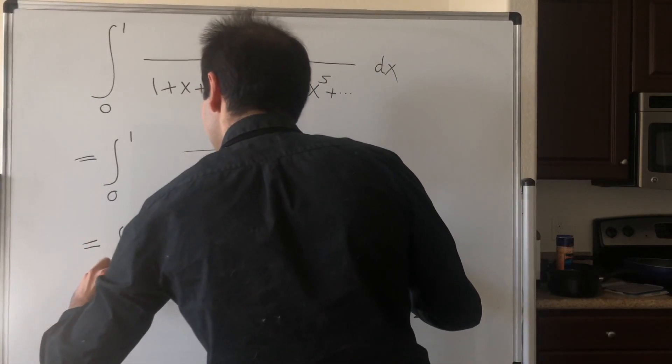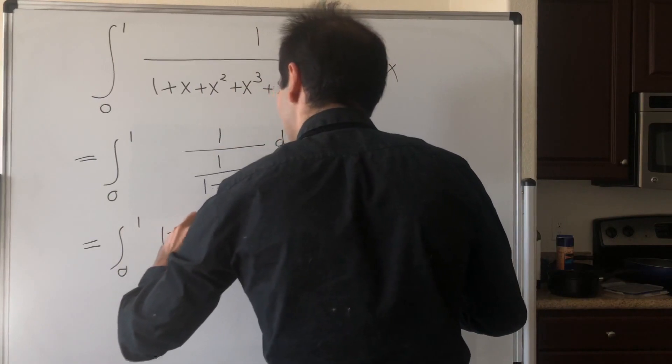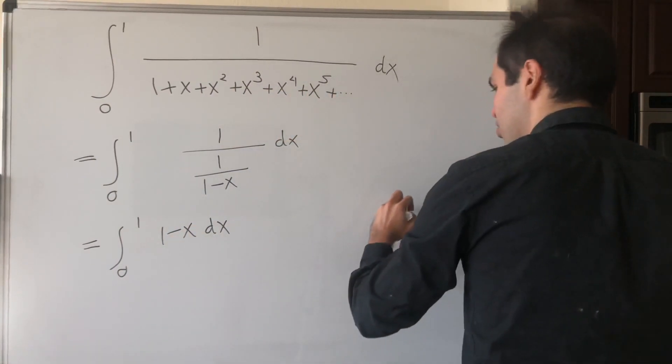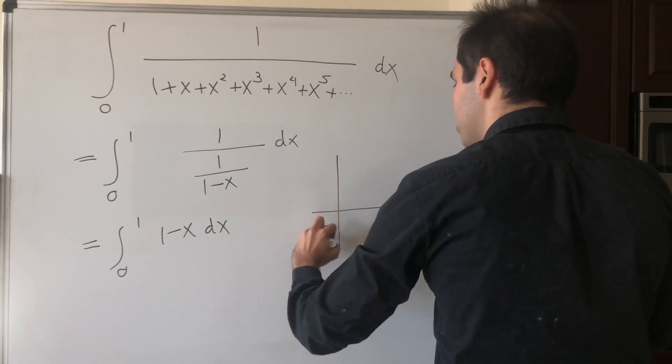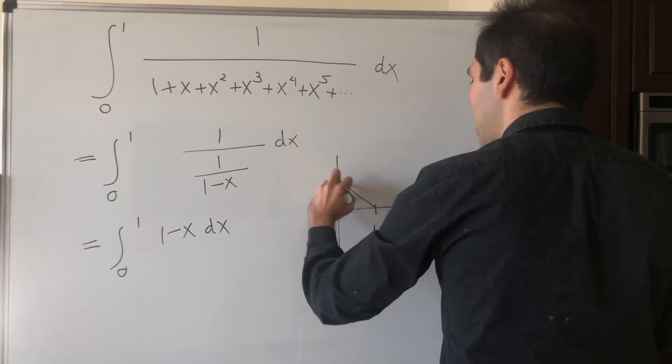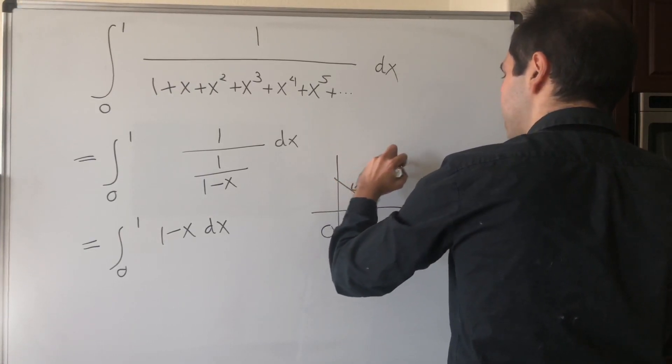Which is just the integral from 0 to 1 of 1 minus x dx, but all this becomes is just the area of the triangle under 1 minus x.